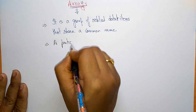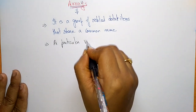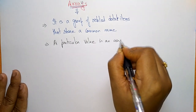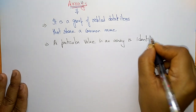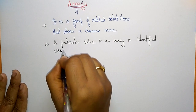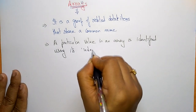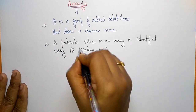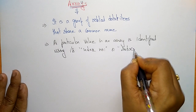A particular value in an array is identified using its index number or subscript.